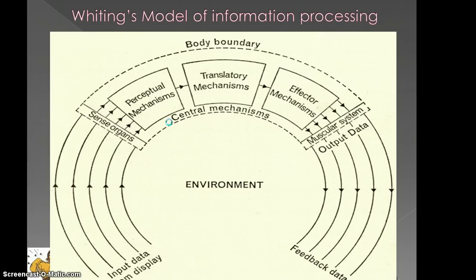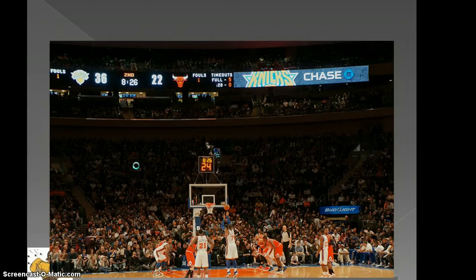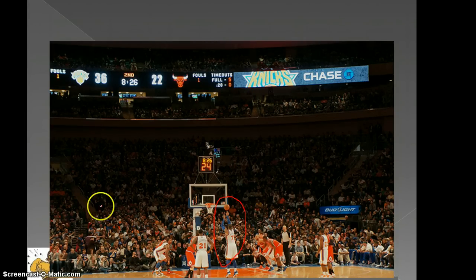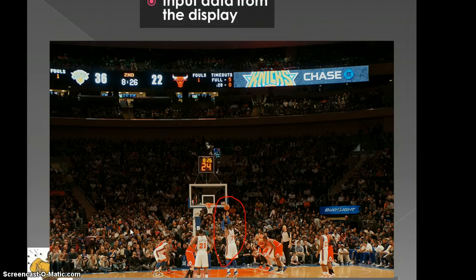This is a copy of Whiting's model of information processing. We're going to start with the input data, which we receive from the display, and it goes into our senses as we've just identified. But what do we mean by display? Imagine you're the player — the display is everything that you can see, feel, hear, even smell. It's all of the aspects affecting your senses, and all of this display will affect you and how well you can actually perform. All of this information is going into your senses and then you have to selectively attend to the relevant information that allows you to be successful.